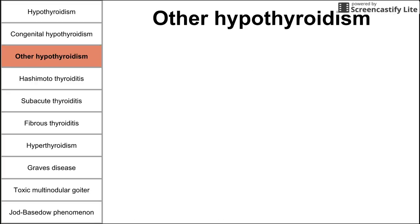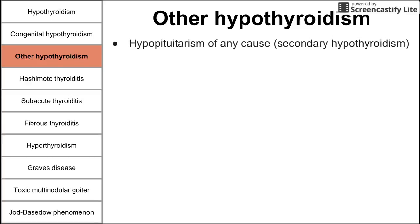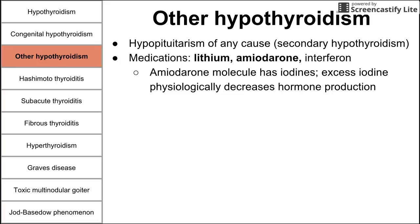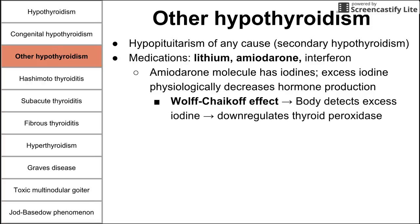Other causes of hypothyroidism include hypopituitarism, called secondary hypothyroidism. Medications such as lithium and amiodarone can also cause hypothyroidism. Amiodarone, used for cardiac arrhythmias, contains a lot of iodine. Excess iodine causes the body to decrease hormone production — the Wolff-Chaikoff effect — where the body detects excess iodine and down-regulates thyroid peroxidase.